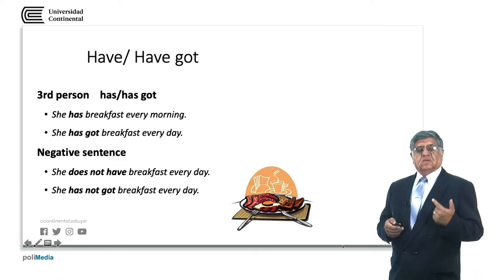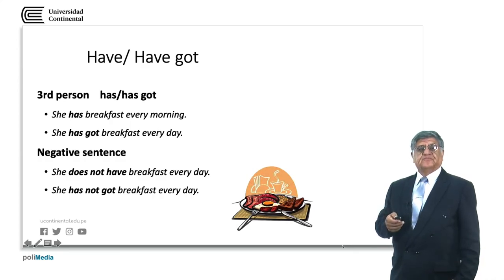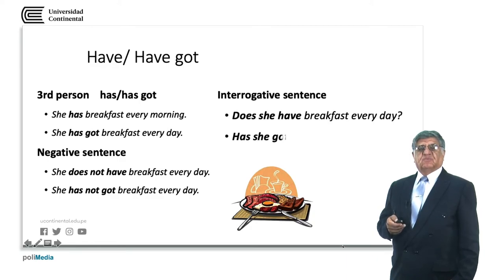If we want to make sentences using a different grammar person, for example, we do not have breakfast every day, we have not got breakfast every day. For interrogative sentences, does she have breakfast every day? Has she got breakfast every day? Does is the auxiliary for the simple verb and has is the auxiliary for the present perfect form of have got. Remember that have or has got are not possessive indicators, actually.